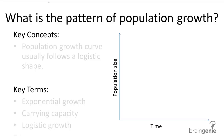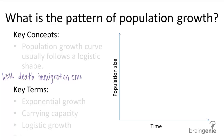Population growth is influenced by many different factors, but to begin the discussion, let's first focus on the variables that affect the rate of growth: the birth rate, the death rate, and the immigration and emigration rate. These should sound familiar because they're similar to the factors that determine population size, but the difference is that population size deals with the number of births, deaths, and amount of immigration and emigration, whereas population growth deals with the rate of birth, death, immigration, and emigration.